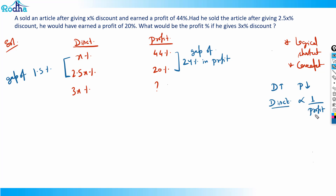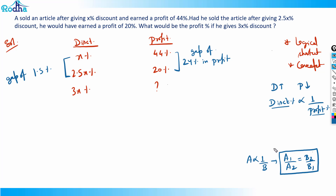Discount is inversely proportional to profit, so more discount means less profit percentage. When two quantities are inversely proportional, we write a1 by a2 equals b2 by b1. This gives us d1 times p1 equals d2 times p2. If directly proportional, we write a1 by a2 equals b1 by b2.